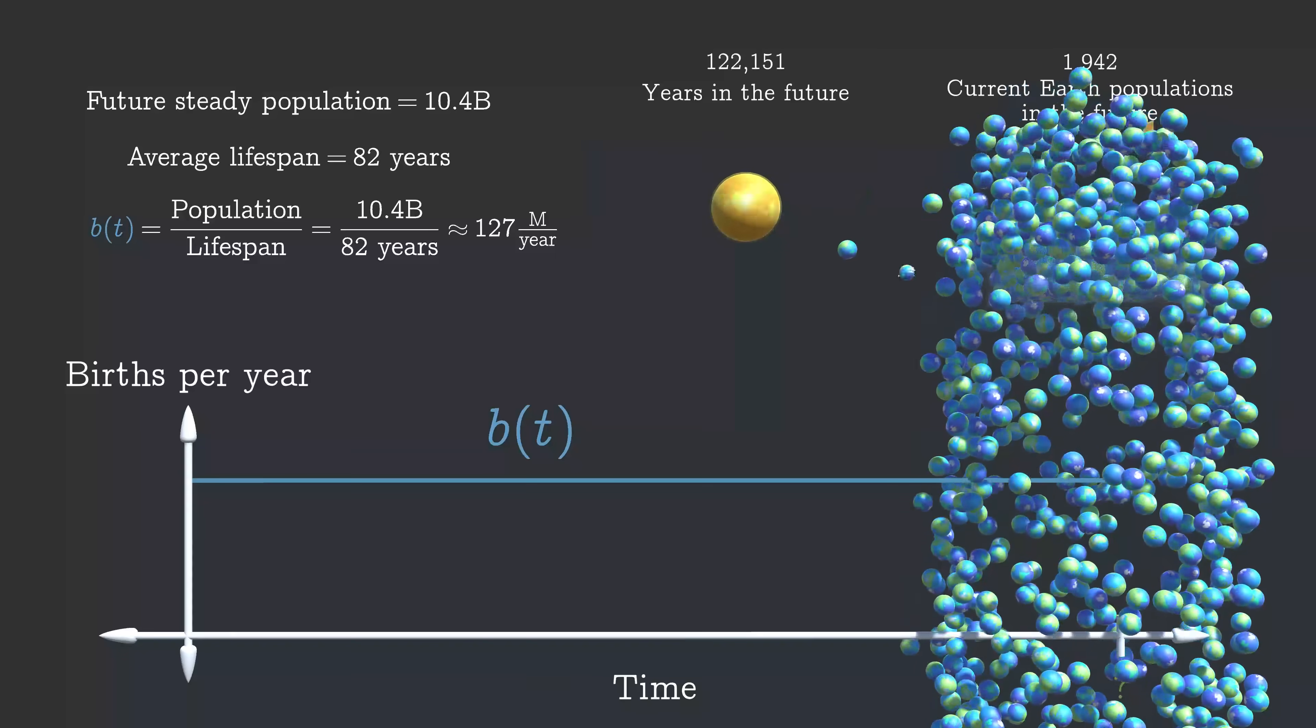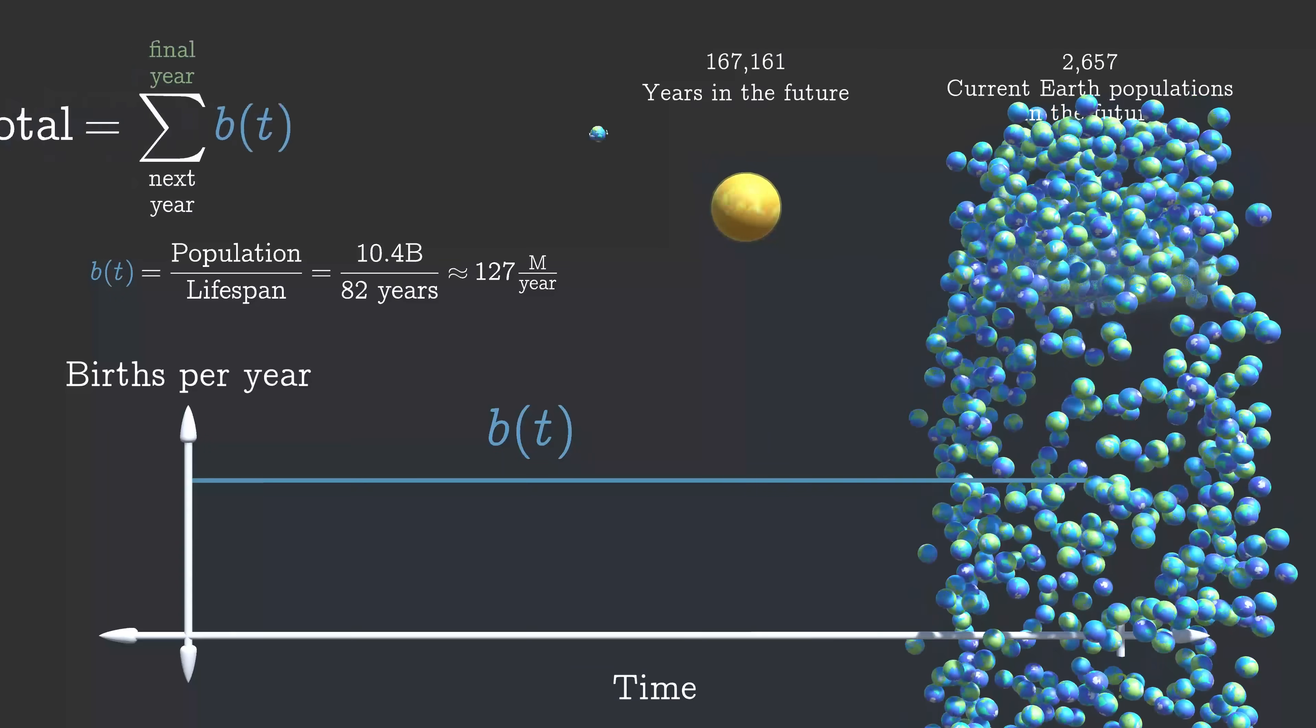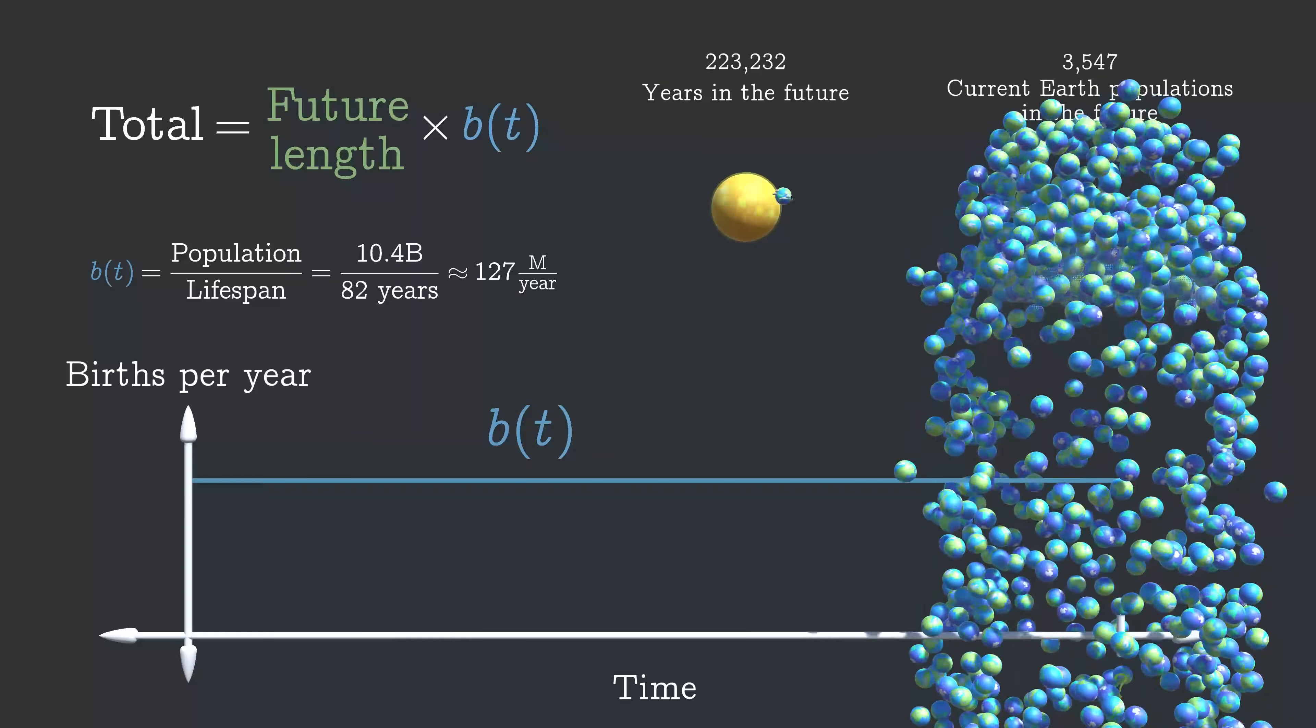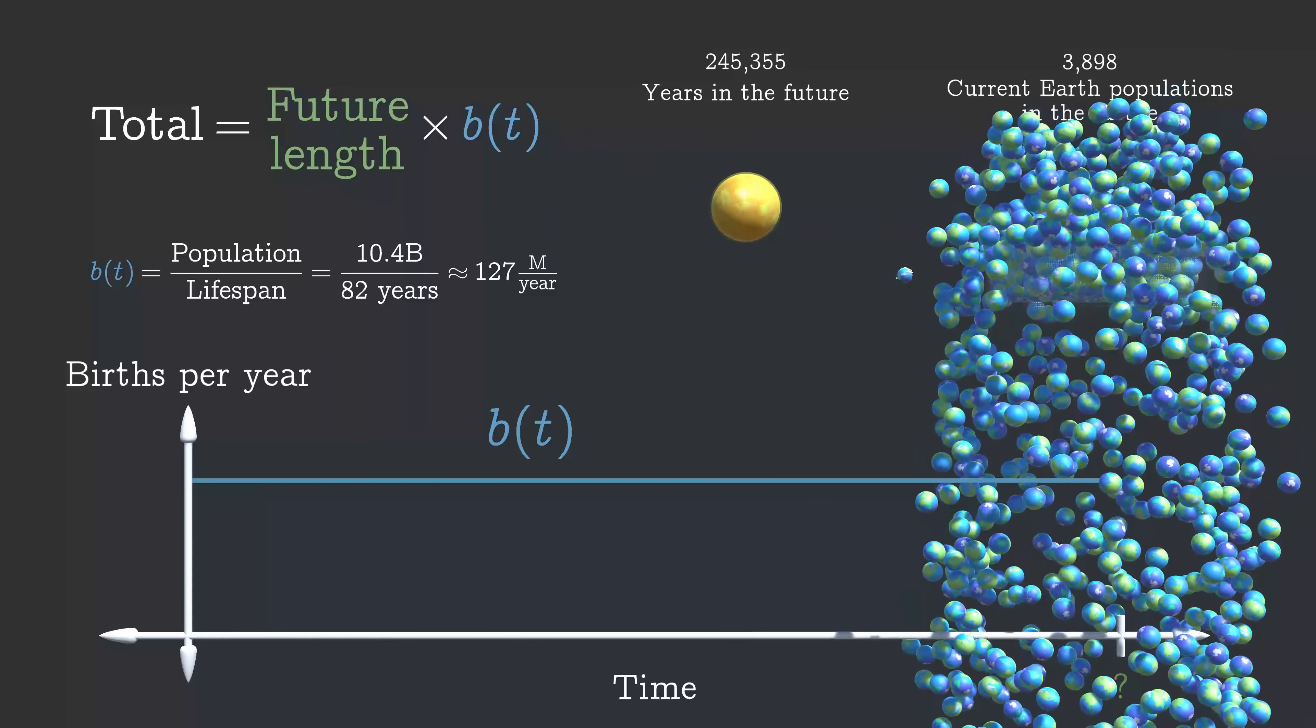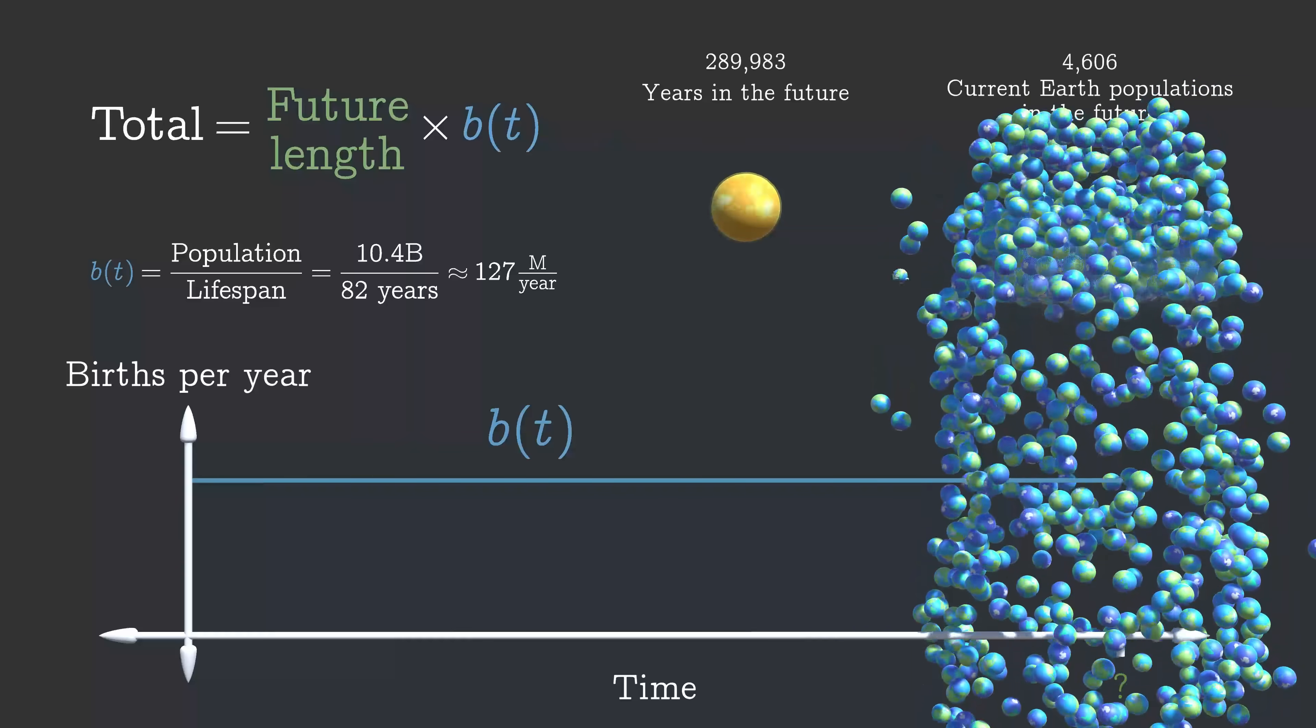And now that we've decided to model the birth rate as a constant number of people per year, on average, we can get rid of this summation sign and just multiply the birth rate by the number of years to get the total number of people born in the future. So the remaining question is, how many years are there in humanity's future?